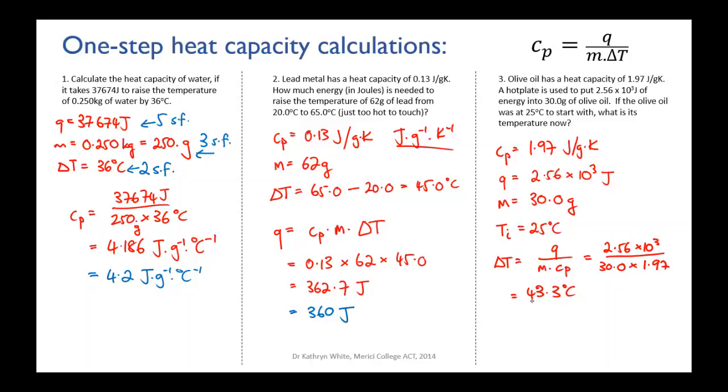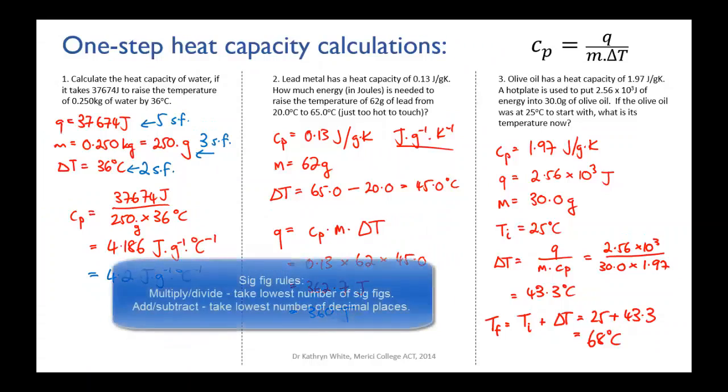Our initial temperature was 25. So our final temperature is going to be the initial temperature plus a change in temperature. 25 plus delta 3.3, which will be 68 degrees Celsius. Recall your significant figure rules for when you're adding. When you're adding or subtracting the thing that you're looking for is the number with the lowest number of decimal places. And that's what tells you how to write your answer.